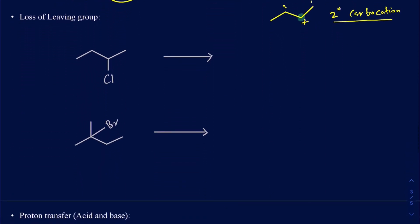The second pattern is loss of a leaving group. If you have a good leaving group, the bond can break on its own. A carbon-chlorine bond breaks due to its polarity — the carbon is partial positive and chlorine is partial negative. Halogens like chlorine, bromine, and iodine are good leaving groups. When the bond breaks, the carbon chain is left with an electron-deficient carbon that gets a positive charge, and the chlorine leaves with the extra electron, gaining a negative charge.